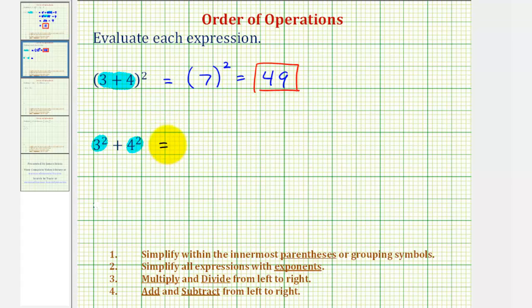Well three squared is equal to three times three, or nine, and four squared is equal to four times four, or sixteen, and nine plus sixteen is equal to twenty-five, so the second expression is equal to twenty-five.